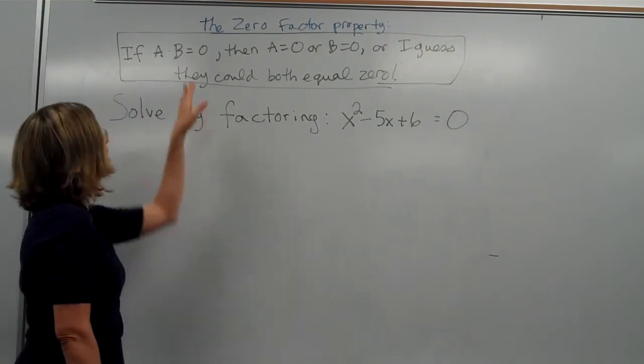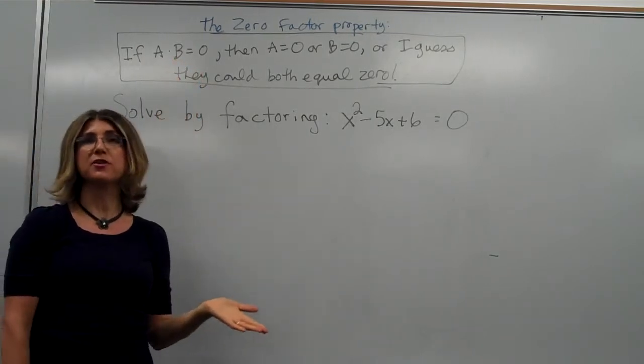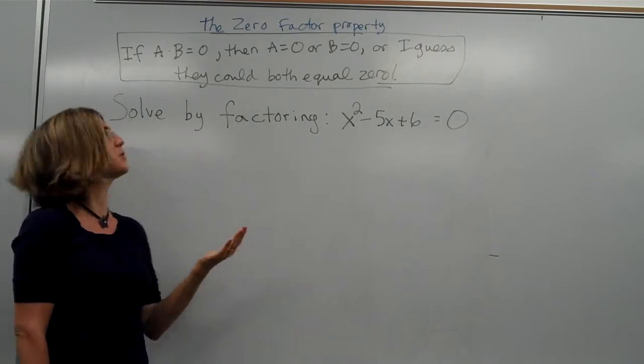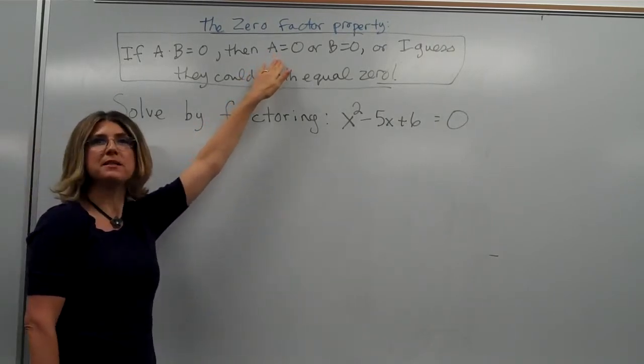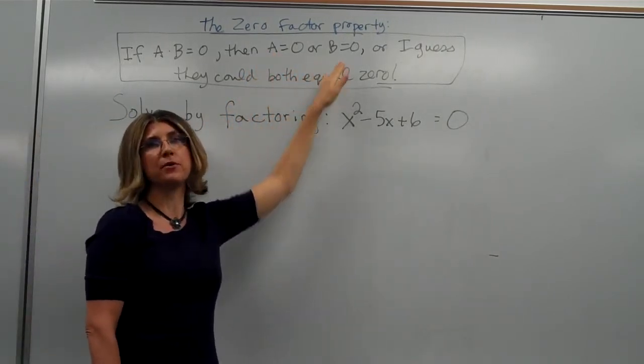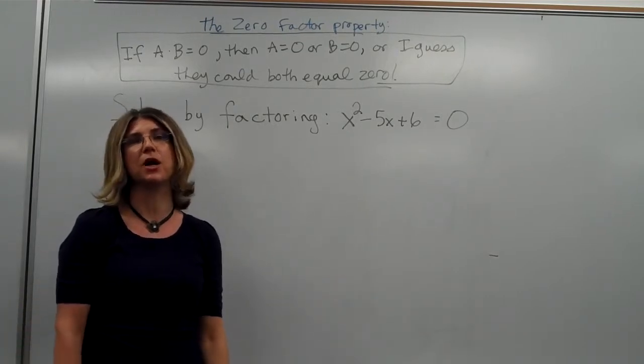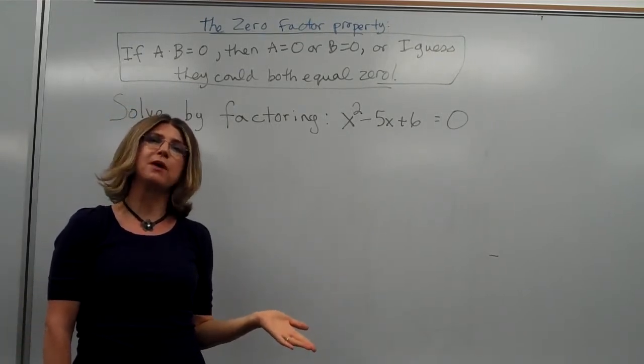The zero factor property says that if A and B are factors of zero, that is A times B is equal to zero, then either A must be zero or B must be zero, or they could both be zero. Think about it. That must be true, right?